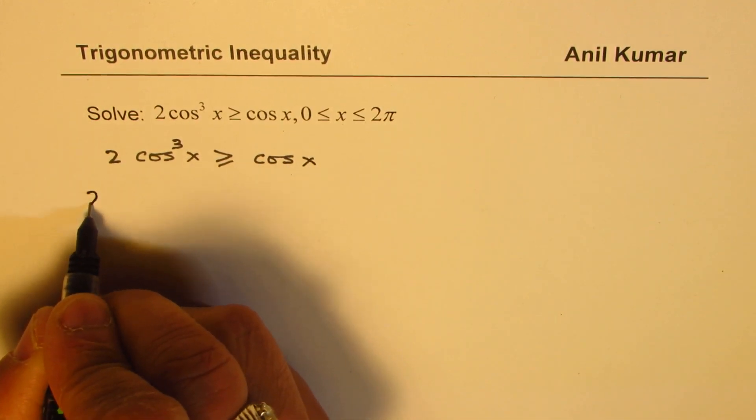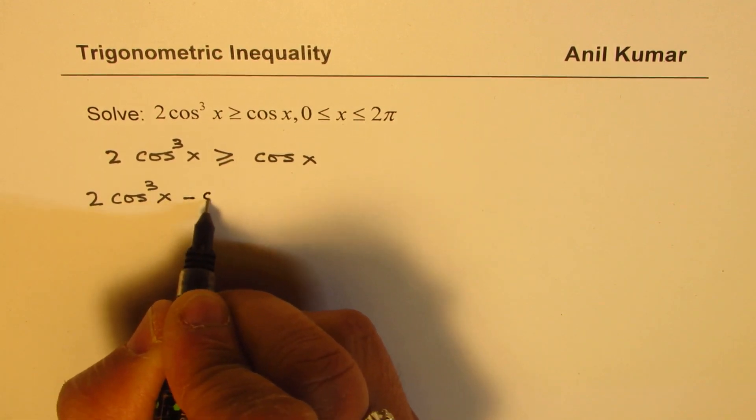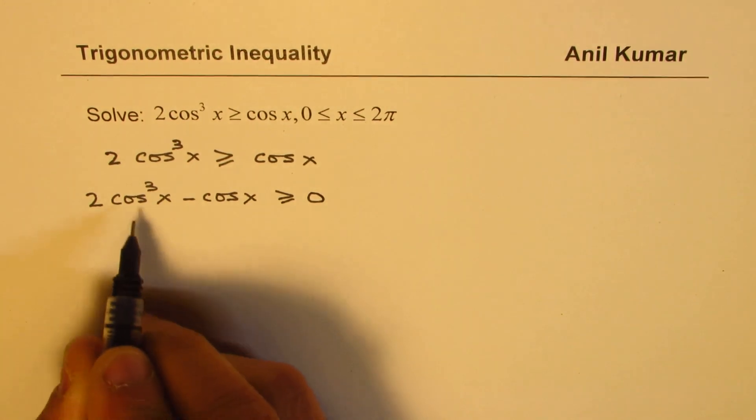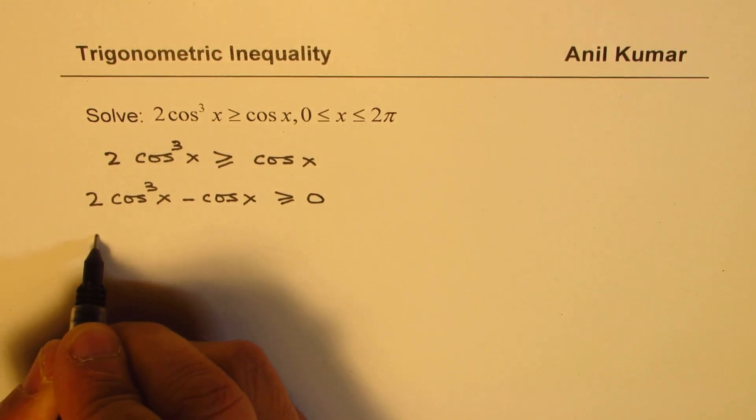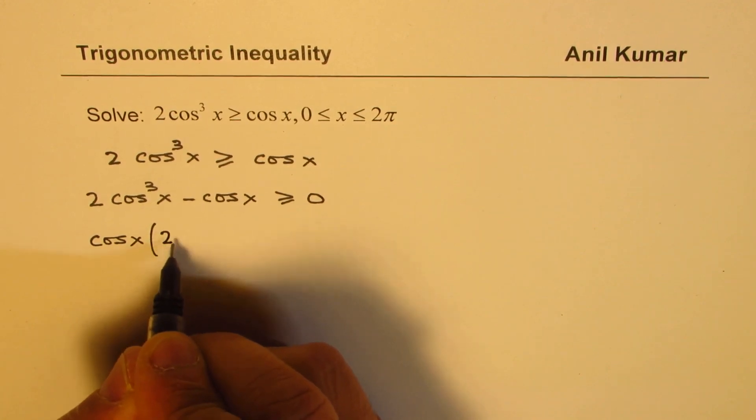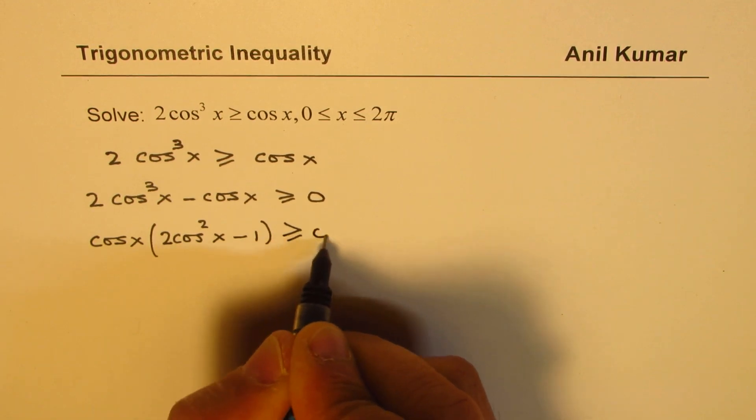Getting cos x to the left side gives us 2 cos³x - cos x ≥ 0. We can factor cos x. So we get cos x(2cos²x - 1) ≥ 0.